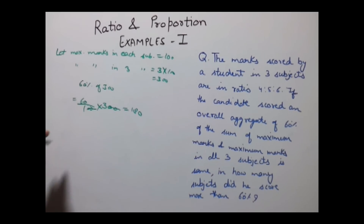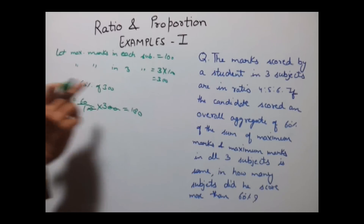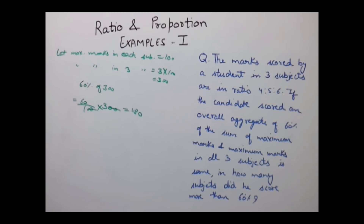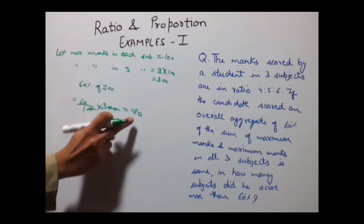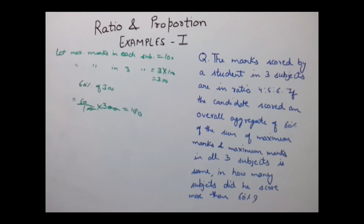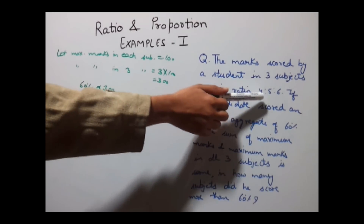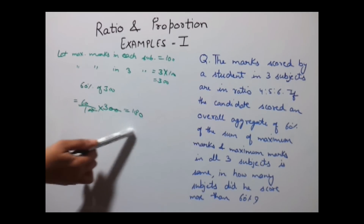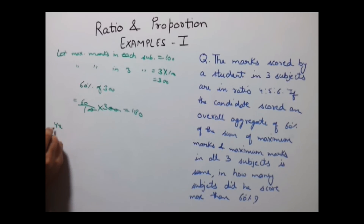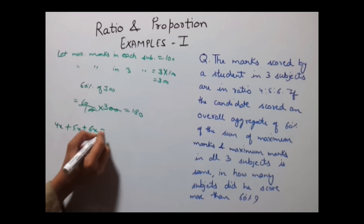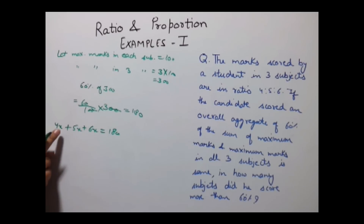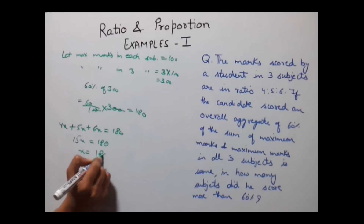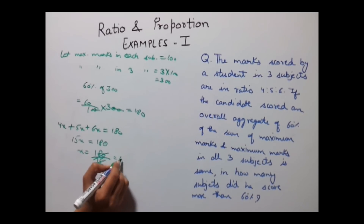We discussed this in our percentages classes. So total overall marks are 180. Now the marks are in the ratio 4:5:6. Using the formula taught in our previous class, we represent the marks as 4x, 5x and 6x. So 4x + 5x + 6x = 180. That gives 15x = 180, and x = 180 ÷ 15 = 12.